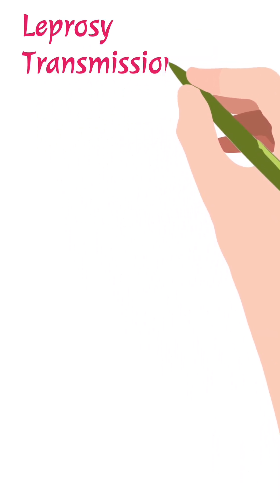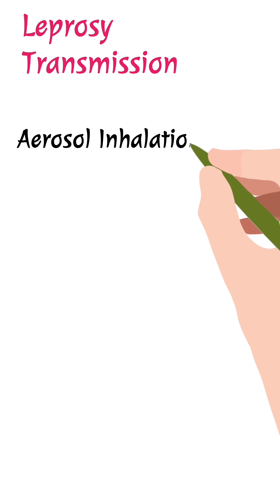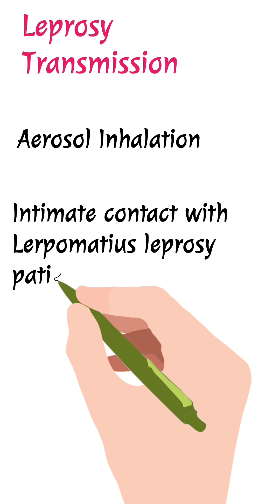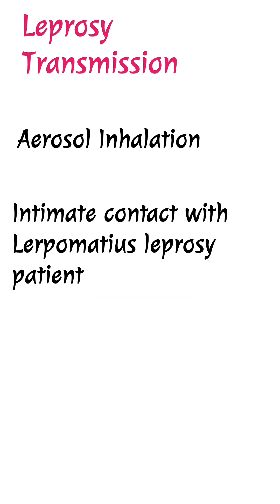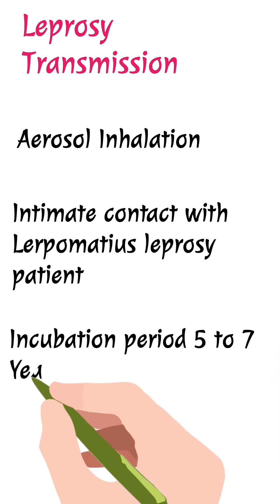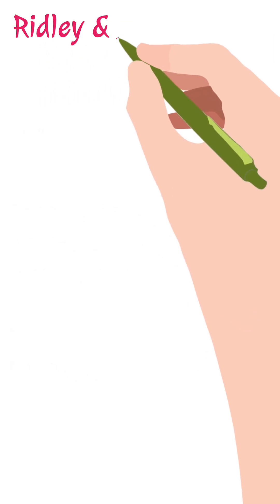In this short YouTube video, I will discuss leprosy transmission and classification. Leprosy is transmitted by the respiratory route, specifically by aerosol inhalation of Mycobacterium leprae. It can also spread by intimate contact with a leprosy patient, particularly a lepromatous leprosy patient. The incubation period is up to five to seven years, after which full-fledged clinical manifestation can develop.